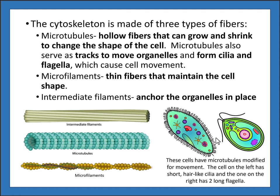These cells have microtubules modified for movement. The cell on the left has short hair-like cilia around the outside that wave and help the cell move through its environment. The one on the right has two long flagella — whip-like structures that can spin and move to help the cell navigate through its environment. Both cilia and flagella are formed from microtubules.